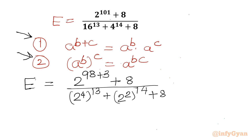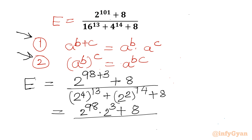Applying the properties, I write 2 power 98 times 2 power 3, plus 8, divided by 2 power (4 times 13) which is 2 power 52, plus 2 power (2 times 14) which is 2 power 28, plus 8. Now 2 power 3 is 8, so the numerator becomes 8 times 2 raised to the power 98, plus 8.